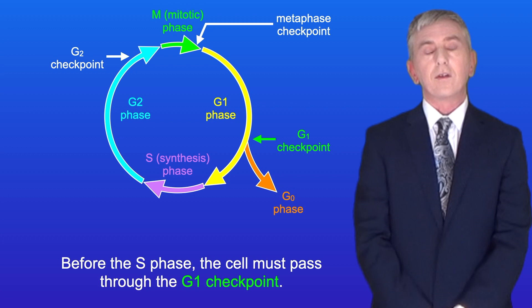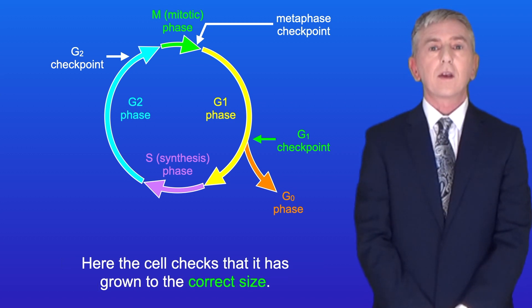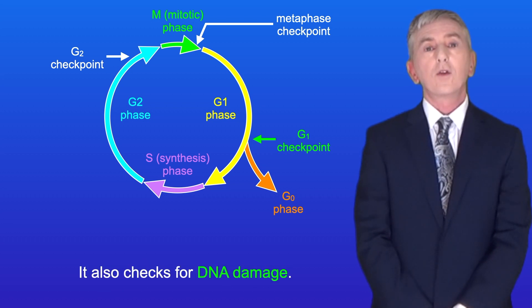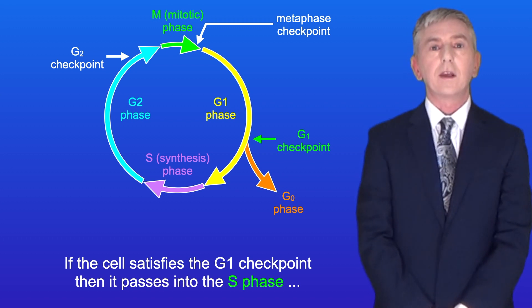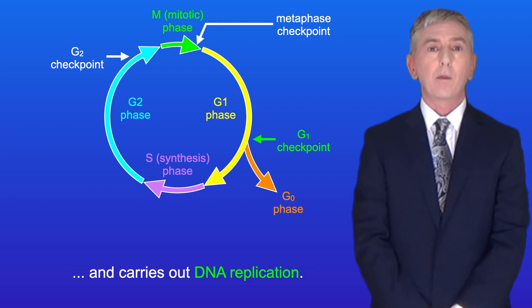Before the S phase the cell must pass through the G1 checkpoint. Here the cell checks that it's grown to the correct size. It also checks for DNA damage. If the cell satisfies the G1 checkpoint then it passes into the S phase and carries out DNA replication.